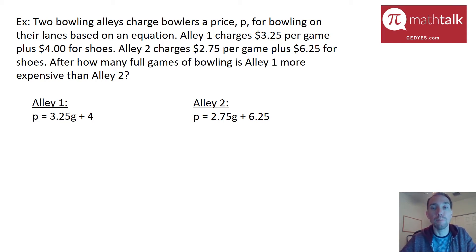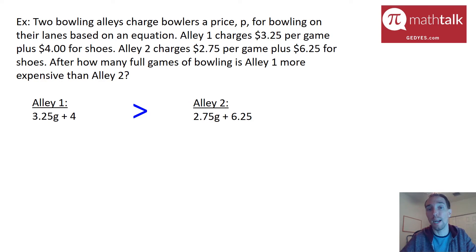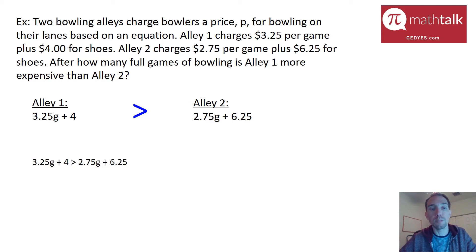We need to compare the expressions — not find the actual price, but find the breaking point where one becomes greater than the other. So I'll set up the inequality: 3.25G plus 4 is greater than 2.75G plus 6.25. You could plug in random numbers for games, but I don't recommend that method because there's a lot of randomness. The better approach is to solve for the variable algebraically.